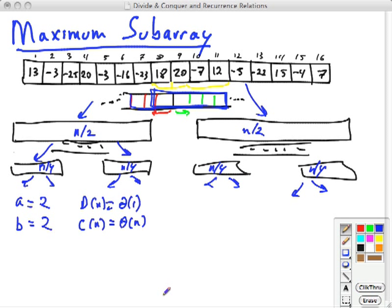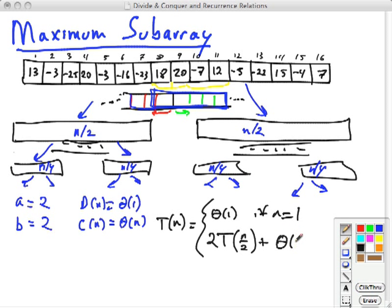So the overall recurrence relation for this is, let's write it over here. T(n) is base case when it's a trivial array. And it is, a is 2, so it's 2T(n/2), two to solve problems of size one-half of the original, n over 2, plus what it takes to divide and combine, which is dominated by theta of n.